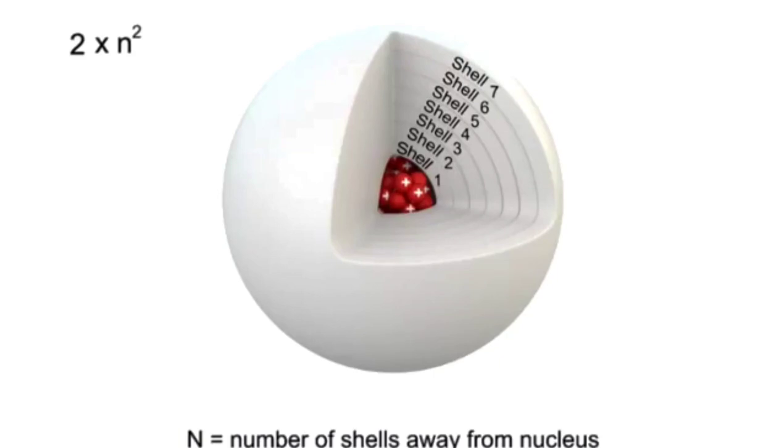To calculate the number of electrons in the first shell, you would use the equation 2 times 1 squared, which is 2 times 1, or 2 electrons.